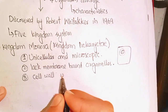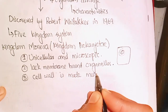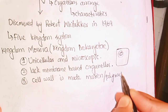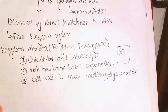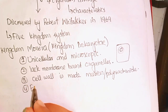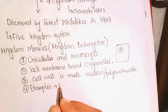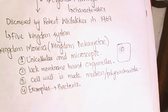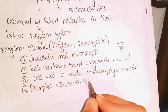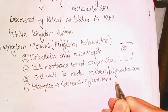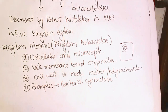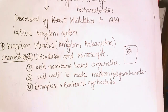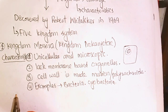Kingdom Monera is made up of marine organisms. Examples include bacteria and cyanobacteria. These are the examples of Kingdom Monera. The characteristics are covered step by step, so you will get full marks.